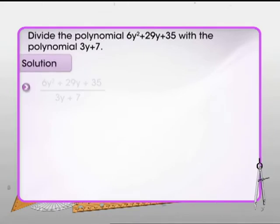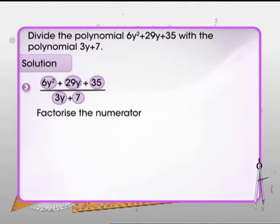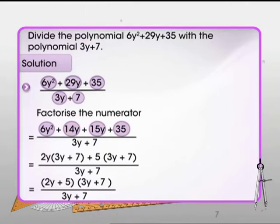Let's divide the polynomial 6y squared plus 29y plus 35 with the polynomial 3y plus 7. We first factorize the numerator. The polynomial 6y squared plus 29y plus 35 can be written as 6y squared plus 14y plus 15y plus 35 by splitting its middle term. Now by grouping and taking common factors out we get 2y plus 5 whole into 3y plus 7 whole.